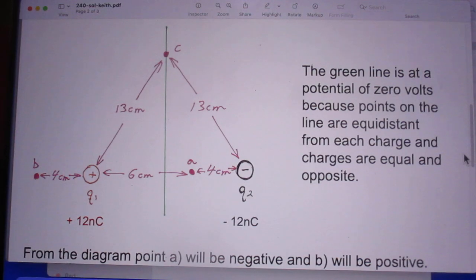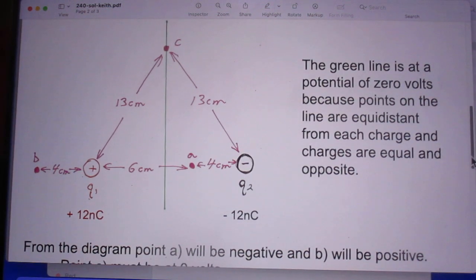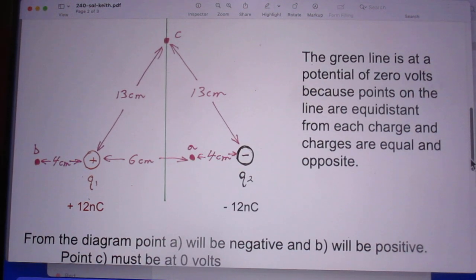The green line is at the potential of zero volts because points on the line are equidistant from each charge and charges are equal and opposite. So digest it for a minute that any point on the green line electric potential must be zero. Therefore also point C.